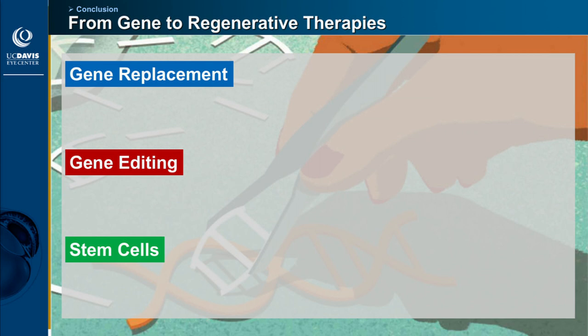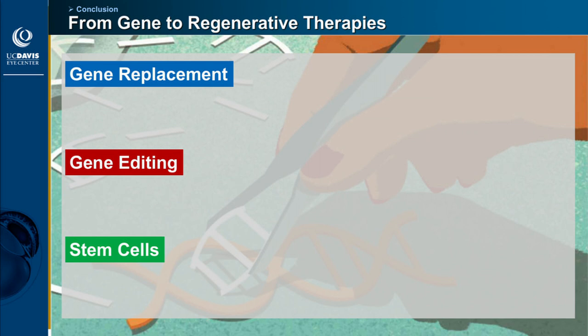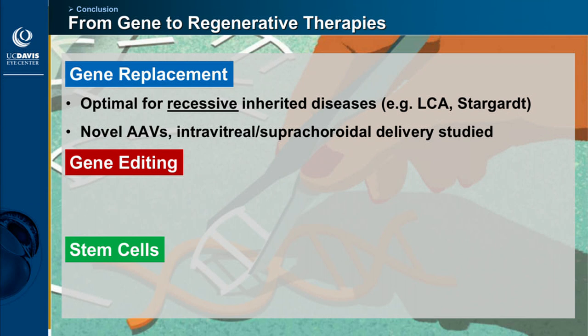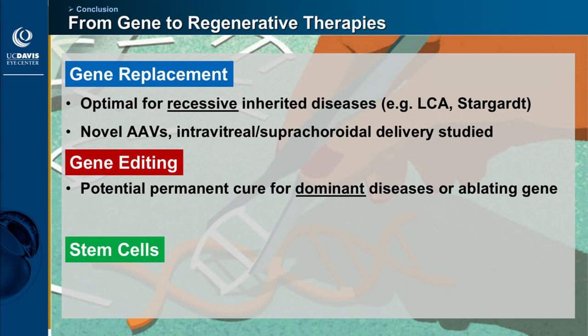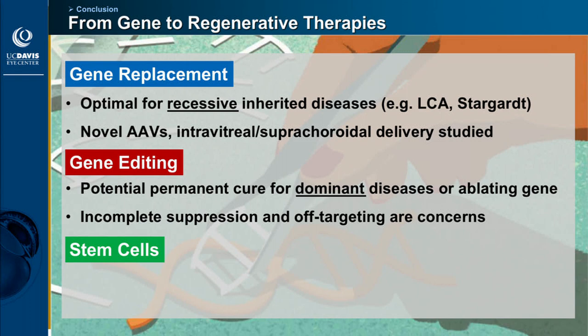In summary: gene replacement is great for recessive diseases, and newer generations of AAV and delivery methods are being developed. Gene editing is great for dominant diseases and for ablating a gene, though off-target effects remain a concern. Stem cells have potential for any advanced disease, but most studies are still in the pilot stage, so safety and biocompatibility remain questions for the future.